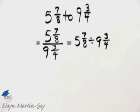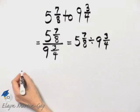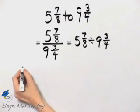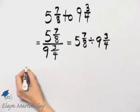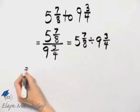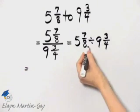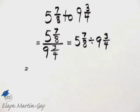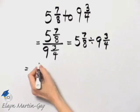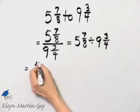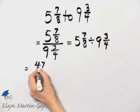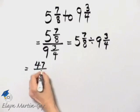Let's remember how we divide mixed numbers. First, let's write each mixed number as an improper fraction. How do we do that? 8 times 5 is 40, plus 7, that's 47 over 8.